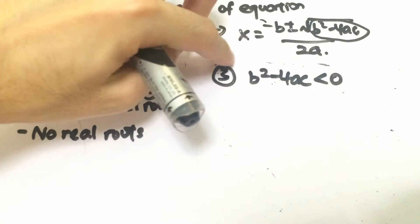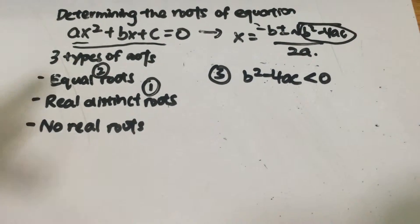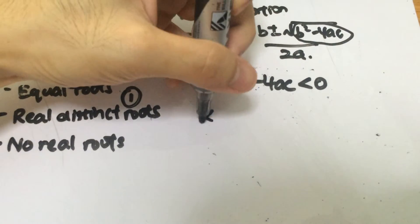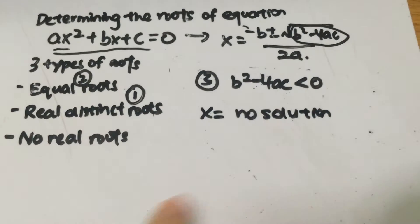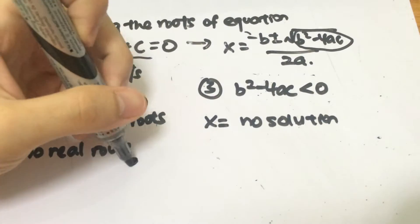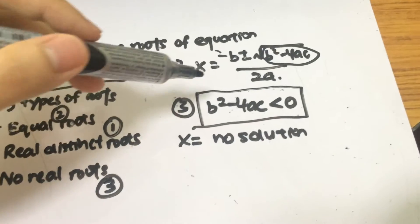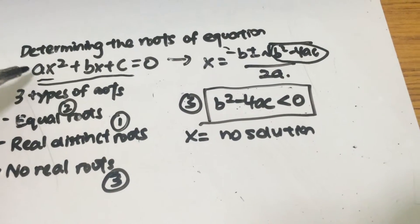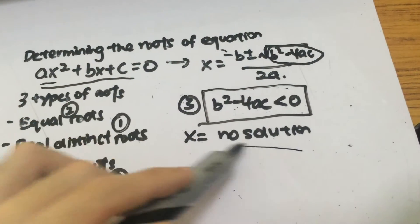In the third scenario, when b squared minus 4ac is less than 0, the value inside the square root is negative. You can't square root a negative, so you end up with no solution. This means the quadratic equation has no real roots. We checked and found that b squared minus 4ac is less than 0, where a, b, and c are the coefficients of x squared, x, and the constant term.